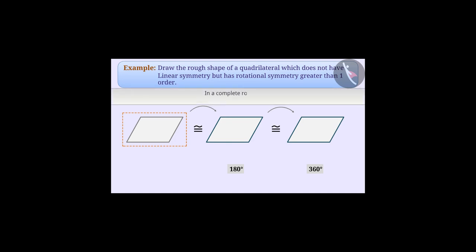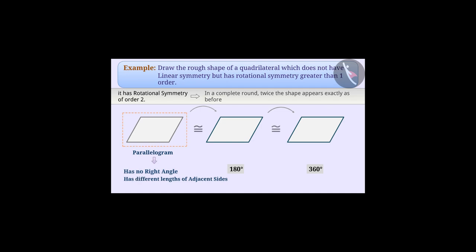Since in a complete round, twice the shape appears exactly as before, we can say that it has rotational symmetry of order 2. An answer to this question is a parallelogram that has no right angle and the length of adjacent sides are different.